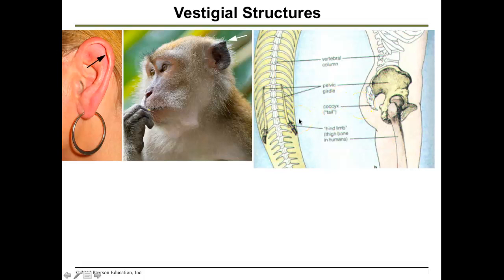Snakes actually have a pelvic girdle and some hind limbs. In the past, snakes had limbs like a lizard, but over time they evolved into an environment where they didn't need those feet anymore, so the hind limbs became smaller and smaller — but they're still present. Knowing that snakes have this vestigial structure, you can infer they must be related to some organism that had hind limbs in the past.